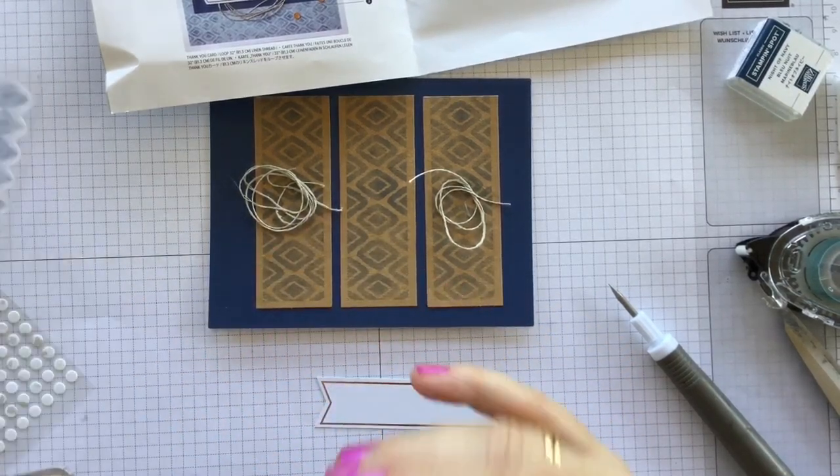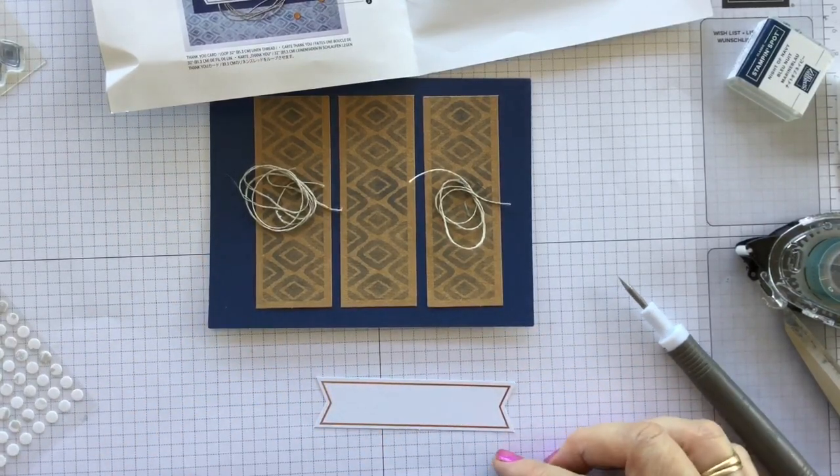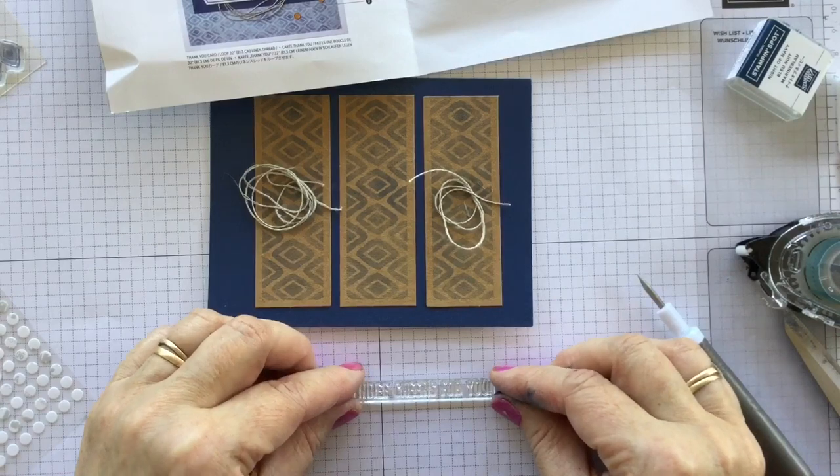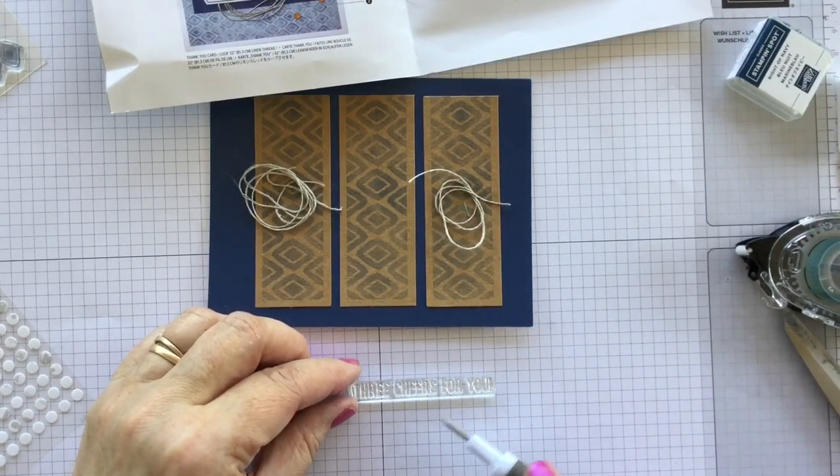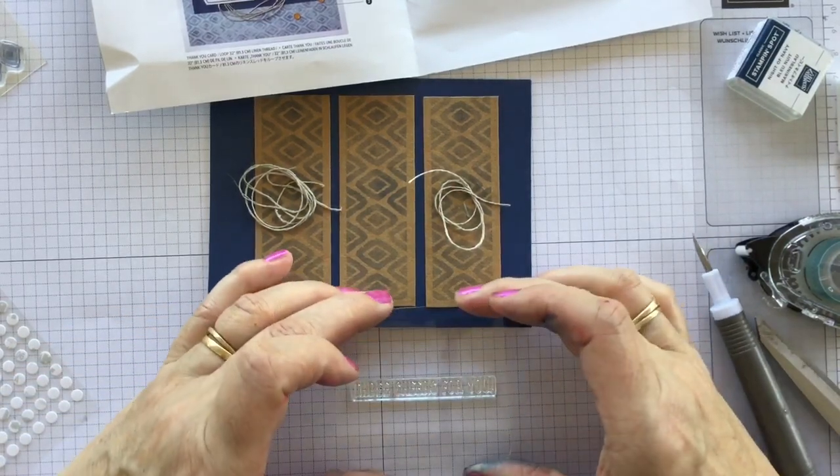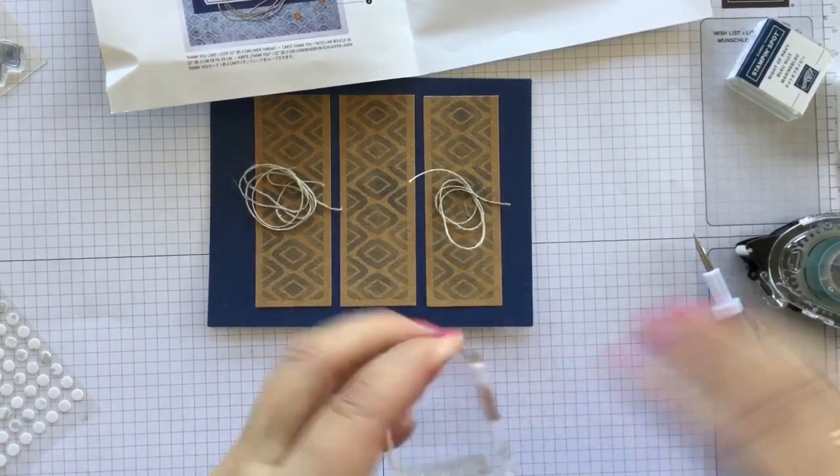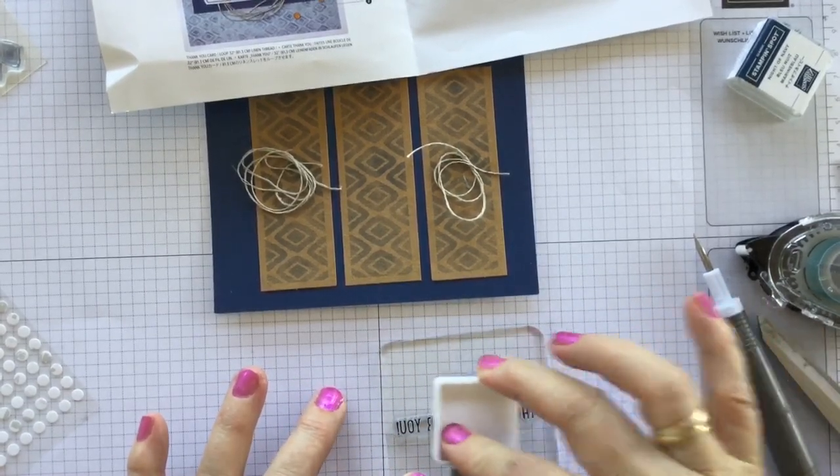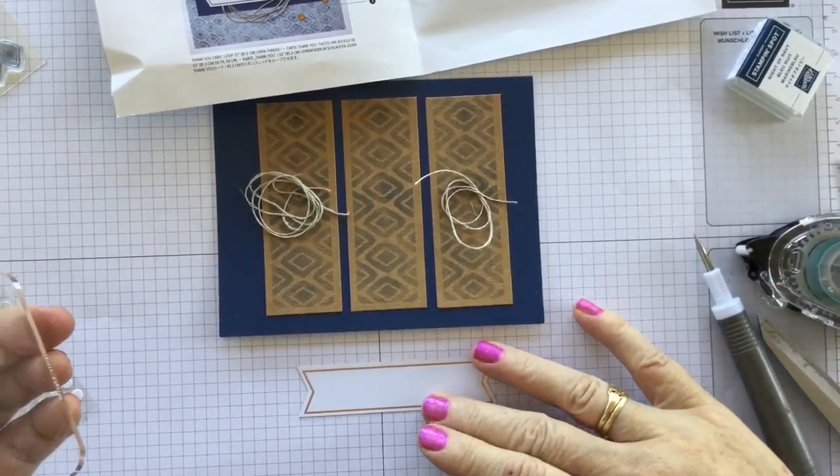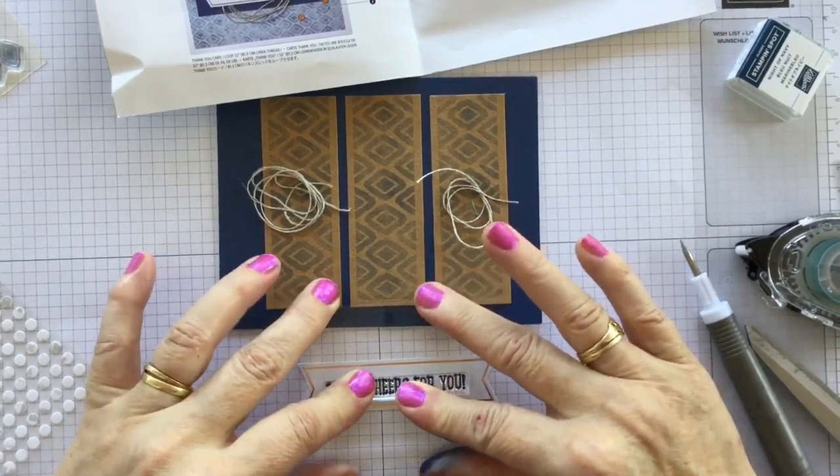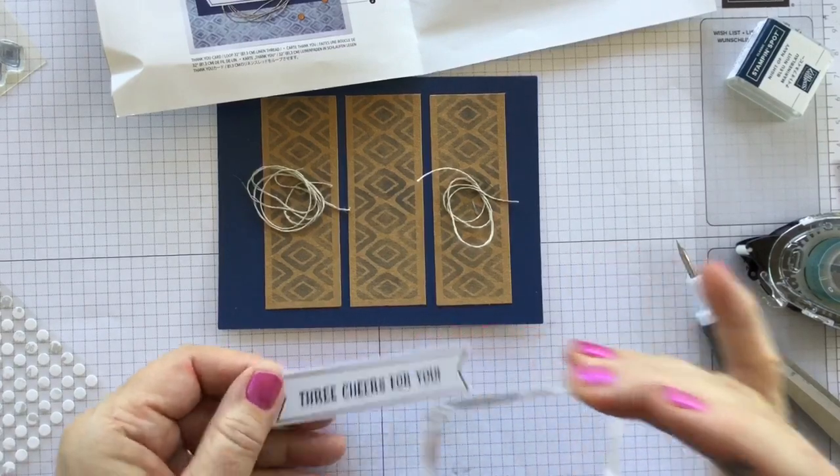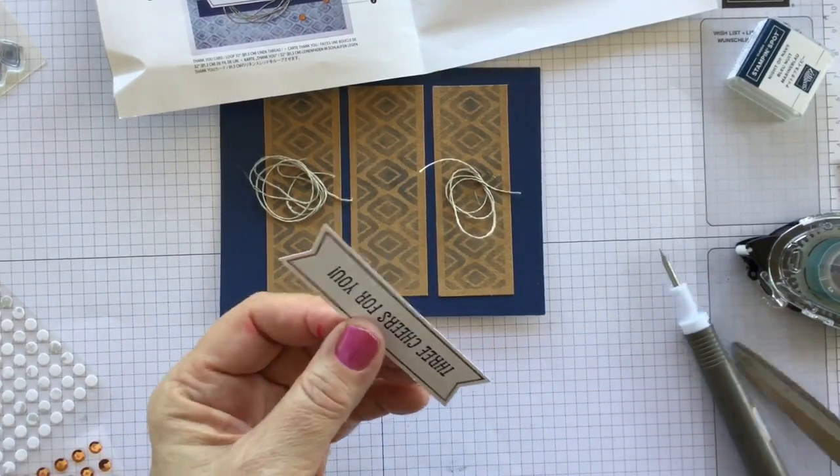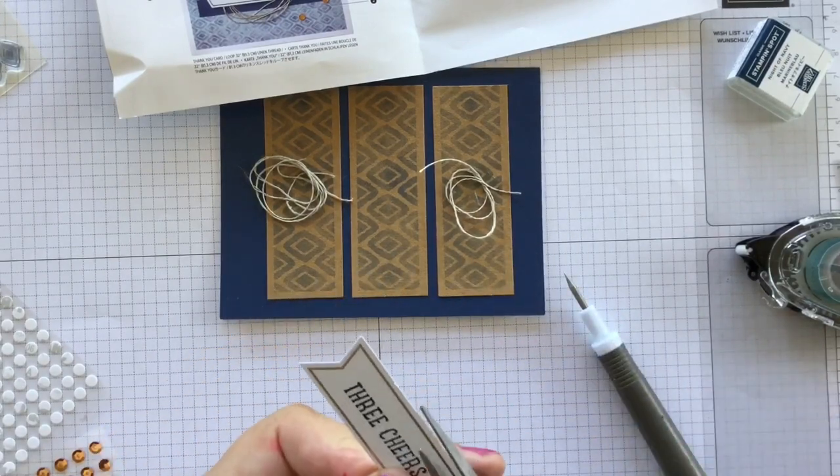Three cheers for you is the sentiment for this card. I'm going to put it on the other one. So another way to line up your stamps if I show you here is to pop your stamp down first. Get it nice and straight on your line. And then just put your block down over. I will ink up. I think I got that a bit crooked but anyway. That will do.